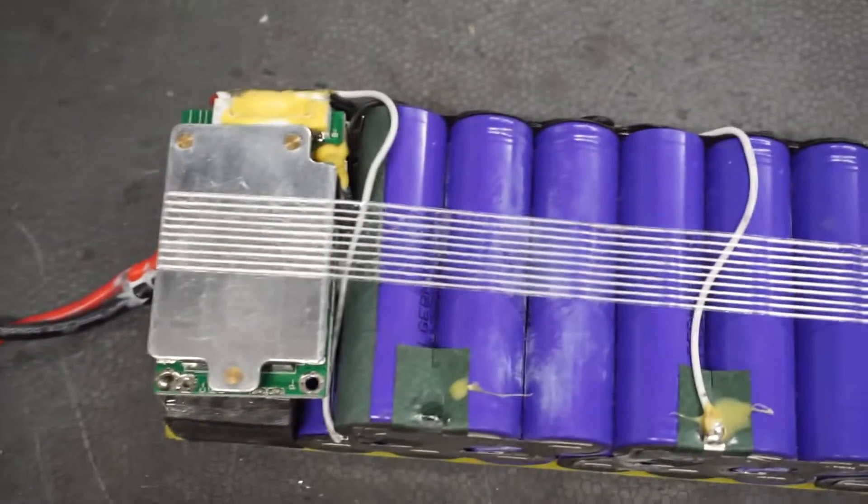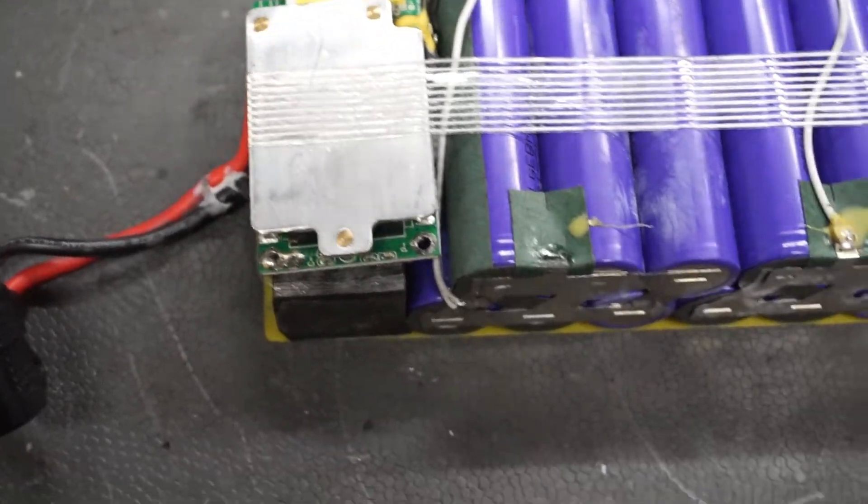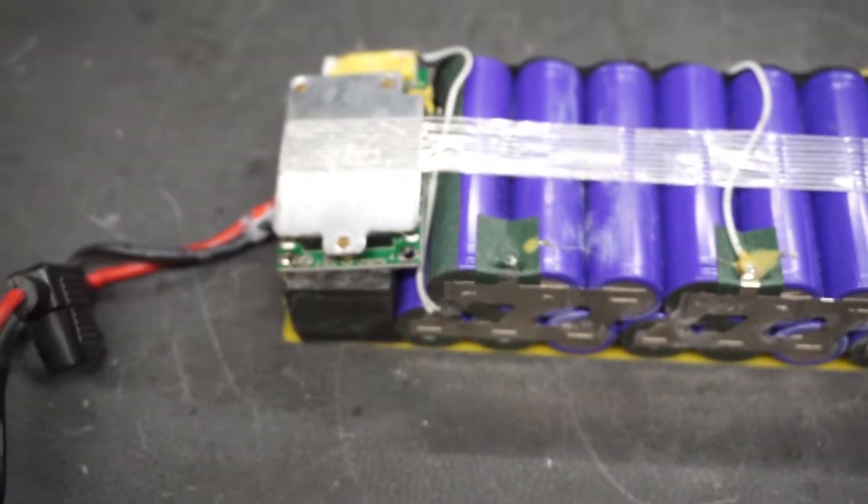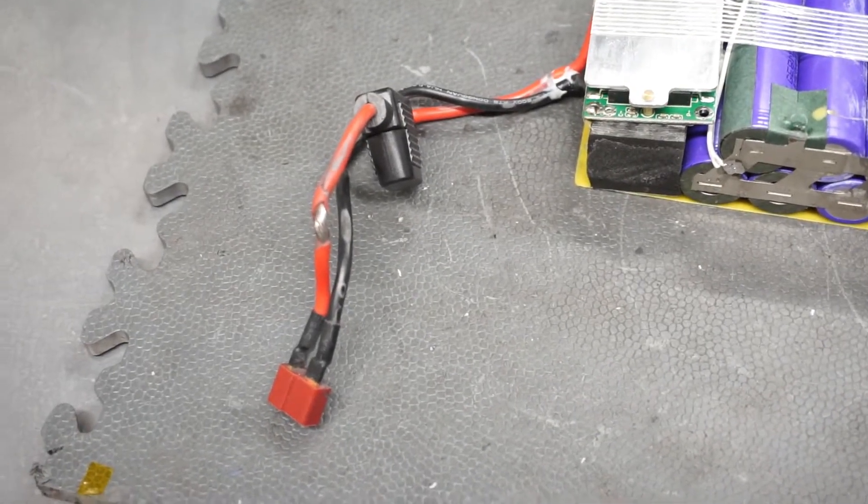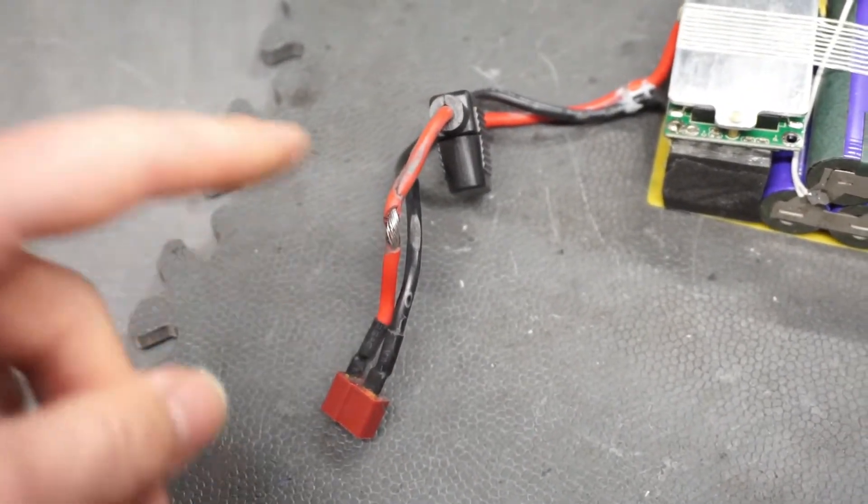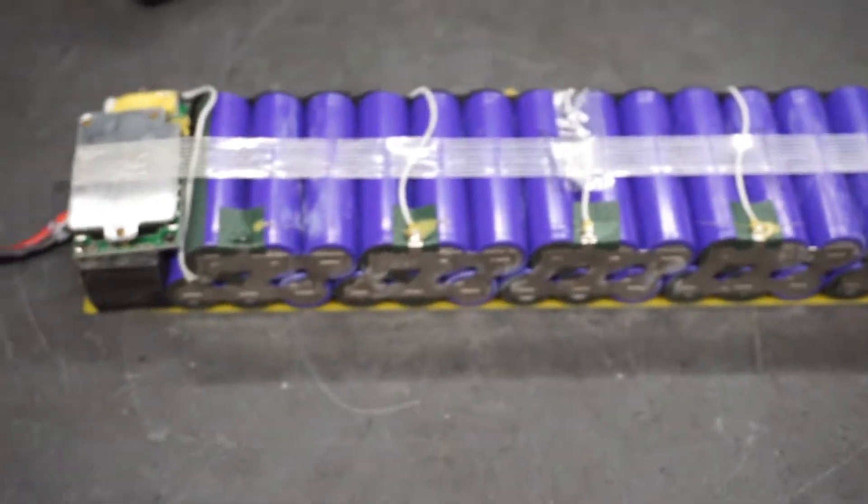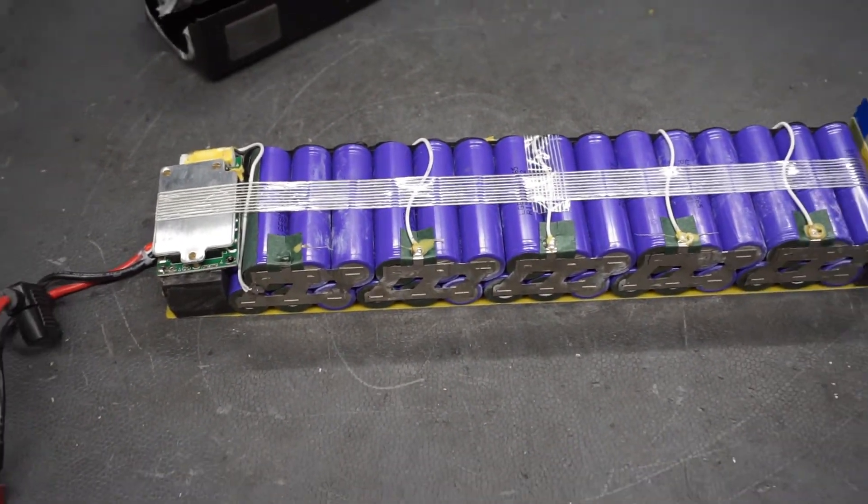Now it's up to the BMS to balance all the cells correctly during the charging process. I just need to fix this broken wire and the reparation is finished.